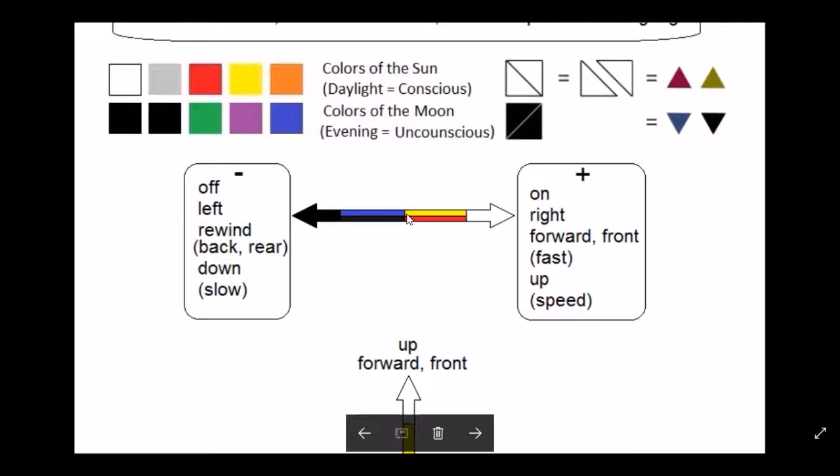we see that depending on the direction the observer is viewing something, left could be left to the observer or it could be right. Depending on the way that you turn your body, the directions change relative to somebody else perceiving those directions, or how they are laid out externally.